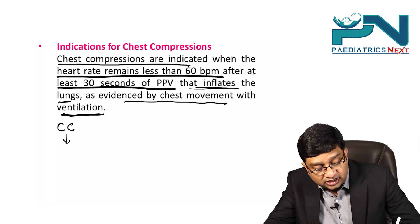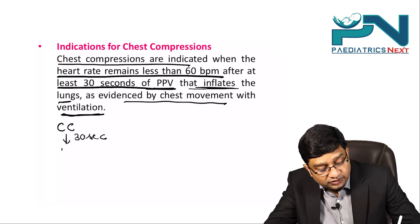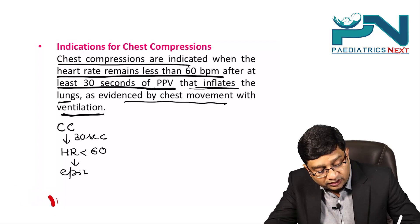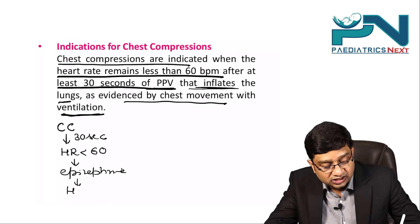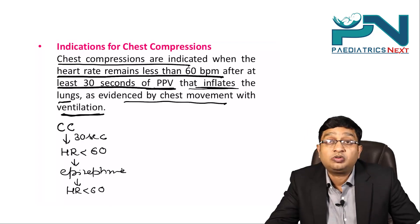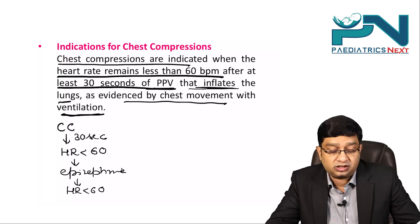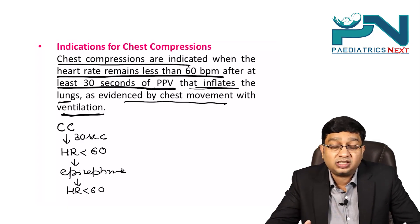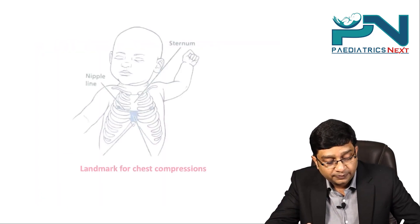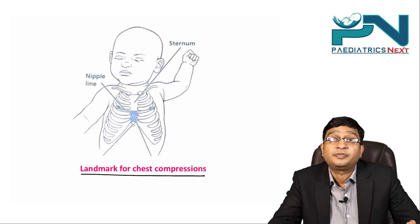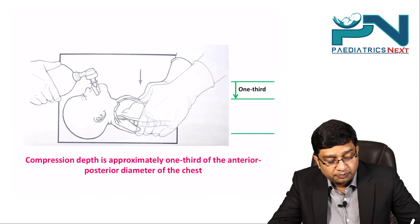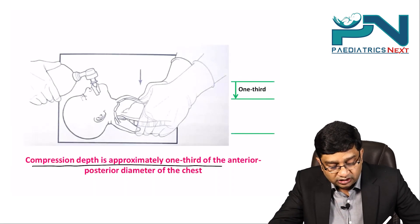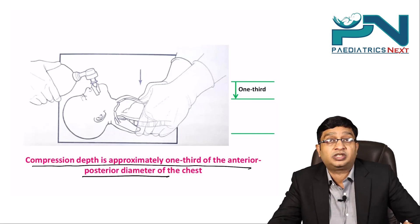If chest movement is present and corrective steps are done, start chest compressions. After 30 seconds of chest compressions, if heart rate is still less than 60, give epinephrine. If epinephrine is given and heart rate remains less than 60, then rule out pneumothorax. The landmark for chest compression: compression depth should be approximately one third of the anteroposterior diameter of the chest.